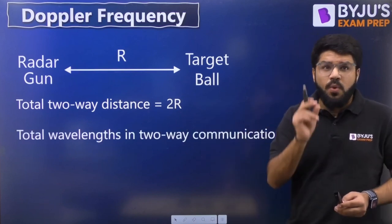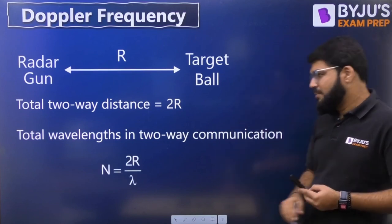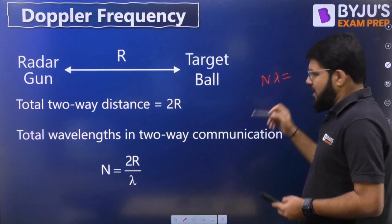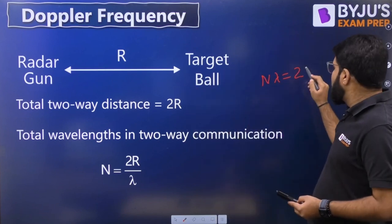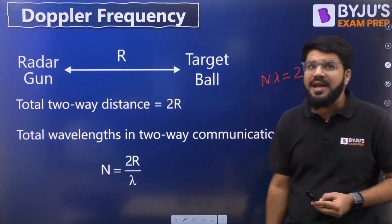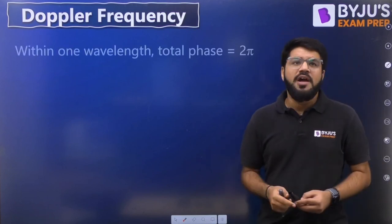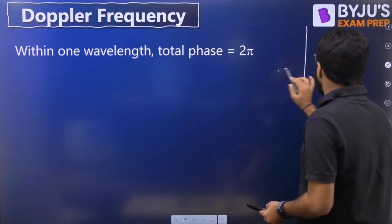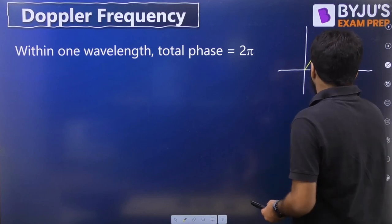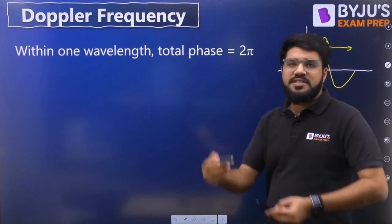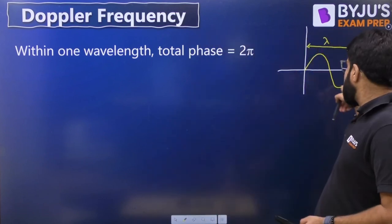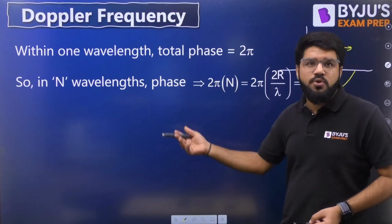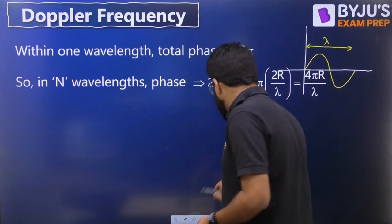The number of wavelengths within the two-way communication is 2r divided by lambda, let's call it n. So n × lambda = 2r. Within one wavelength, the total phase change suffered by the wave is 2π. The wavelength is the distance after which the wave's value repeats, and within that one wavelength the sinusoidal phase is 2π. So within n wavelengths, the total phase φ = 2π × n = 2π × (2r/lambda) = 4πr/lambda.